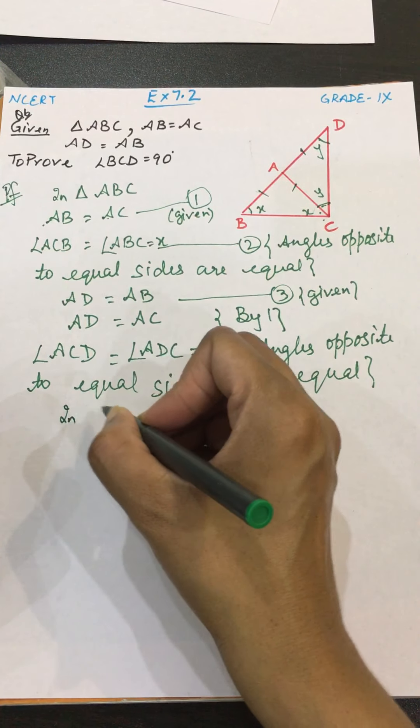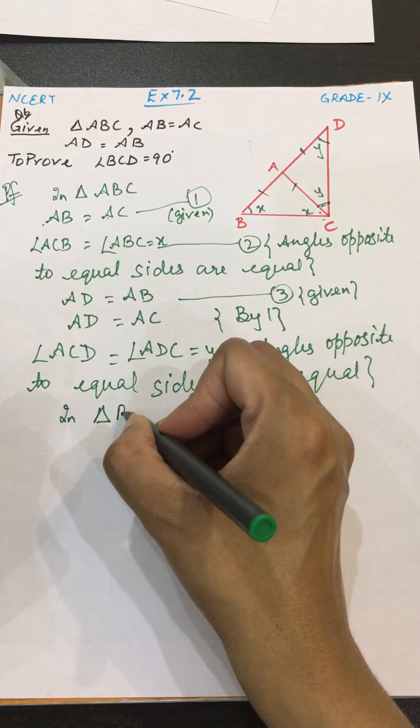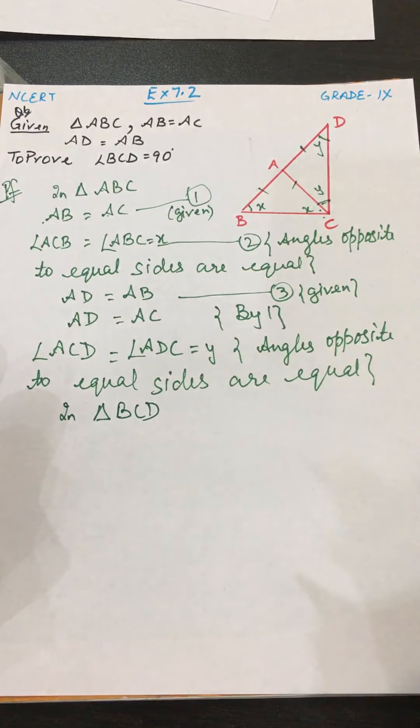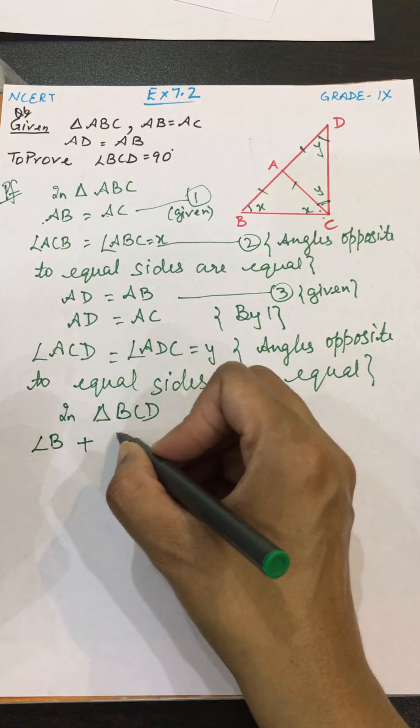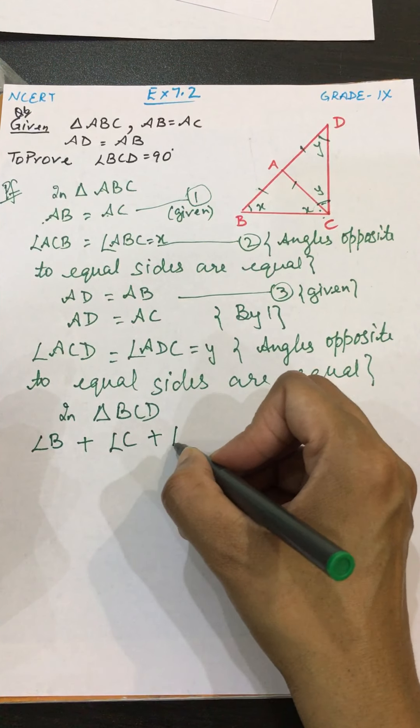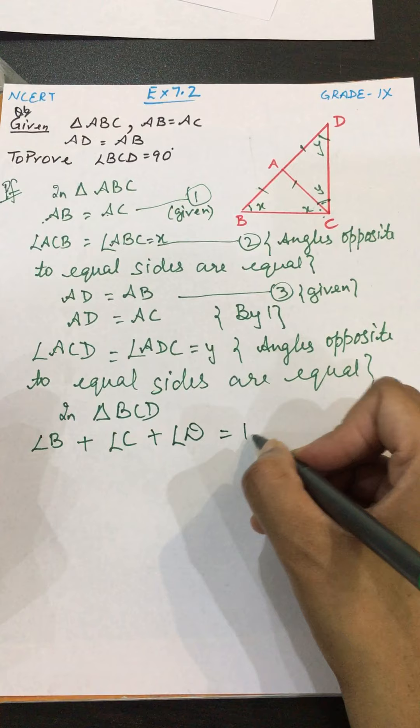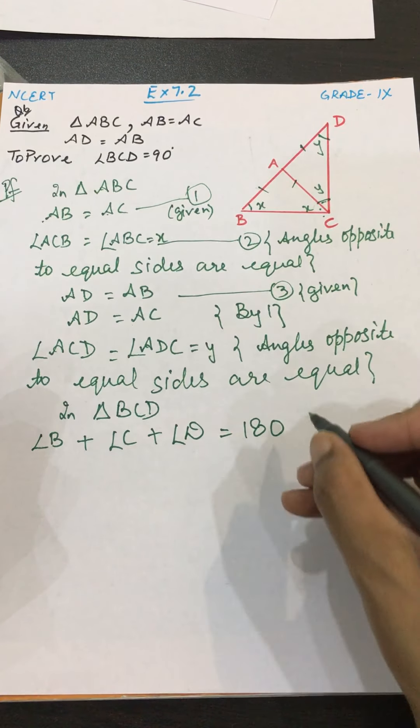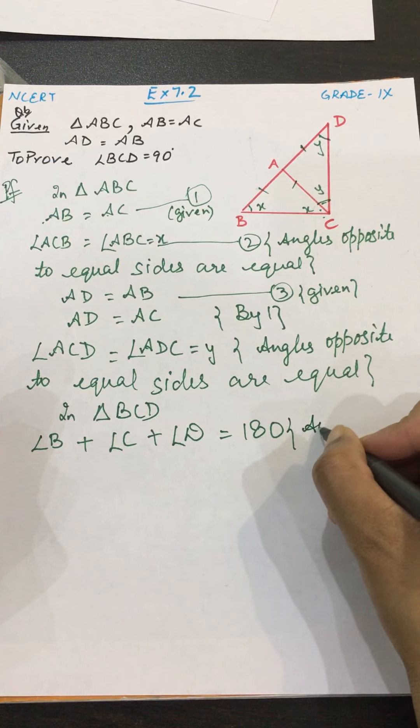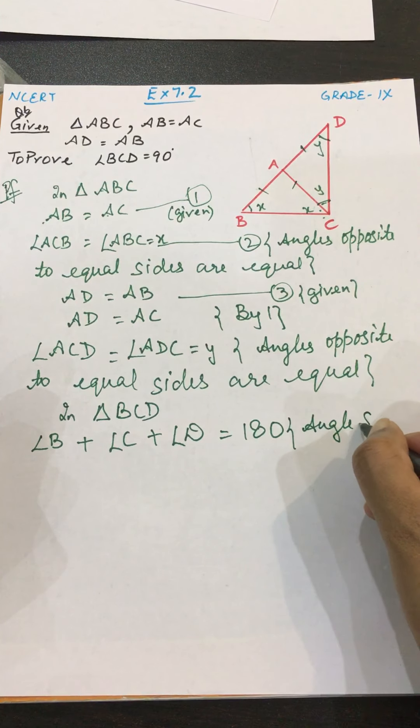Now I will write down in triangle BCD, angle B plus angle C plus angle D equals 180. Why is it 180? Obviously angle sum property. Write down angle sum property.